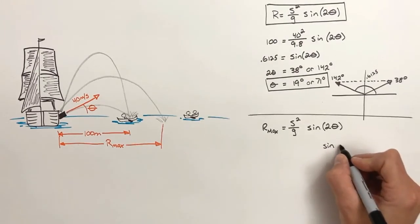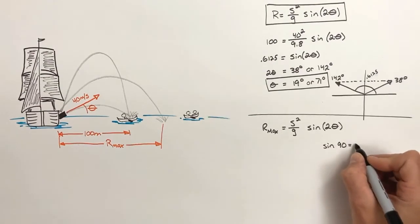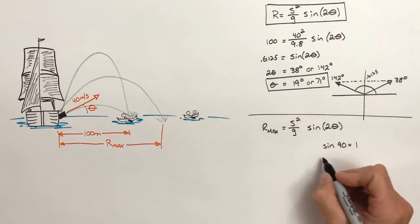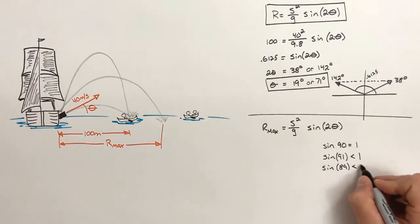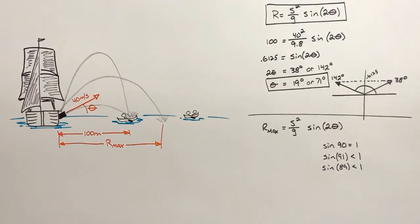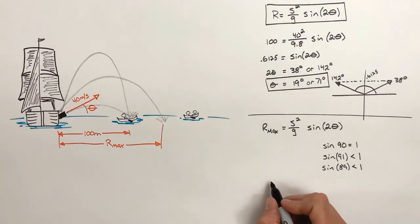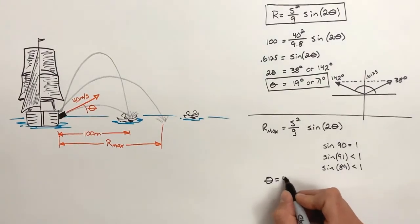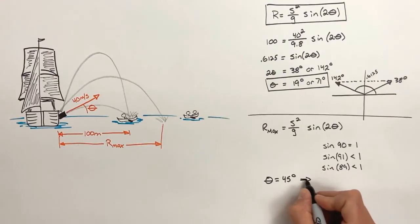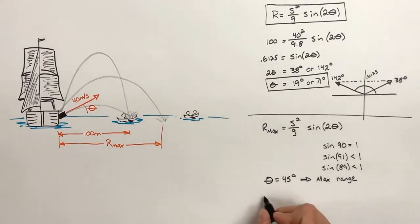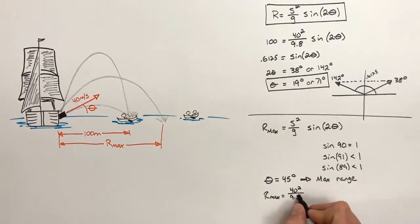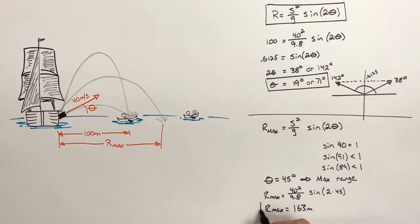The range is maximized when the sine function is maximized as well. The greatest sine can ever be is 1, which occurs at 90 degrees. For us, using the range equation, this means we want the value 2 theta to equal 90 degrees, or theta to equal 45 degrees. If a projectile is fired at 45 degrees, the range across a level surface will be maximized. By plugging in 40 meters per second and 45 degrees, we find the maximum range of this cannon is 163 meters.